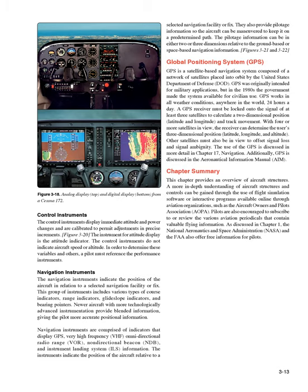Navigation Instruments. The navigation instruments indicate the position of the aircraft in relation to a selected navigation facility or fix. This group of instruments includes various types of course indicators, range indicators, glide slope indicators, and bearing pointers. Newer aircraft with more technologically advanced instrumentation provide blended information, giving the pilot more accurate positional information. Navigation instruments are comprised of indicators that display GPS, very high frequency VHF omnidirectional radio range, VOR, non-directional beacon, NDB, and instrument landing system, ILS, information. The instruments indicate the position of the aircraft relative to a selected navigation facility or fix, and also provide pilotage information so the aircraft can be maneuvered to keep it on a predetermined path.